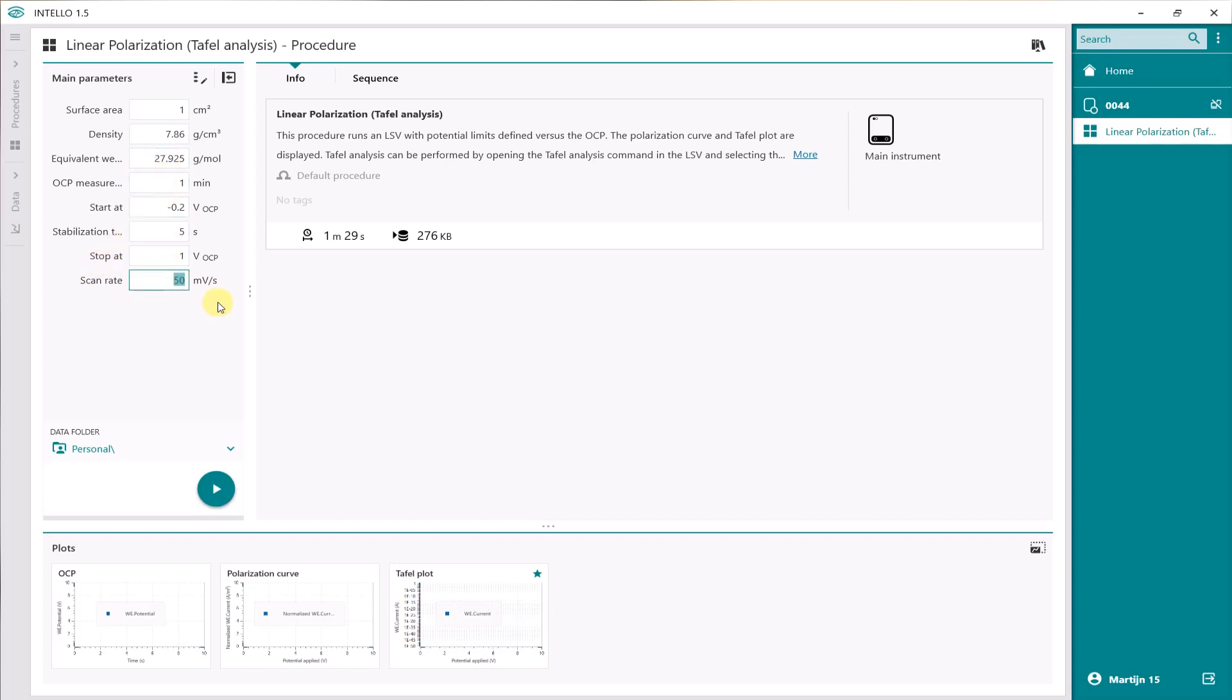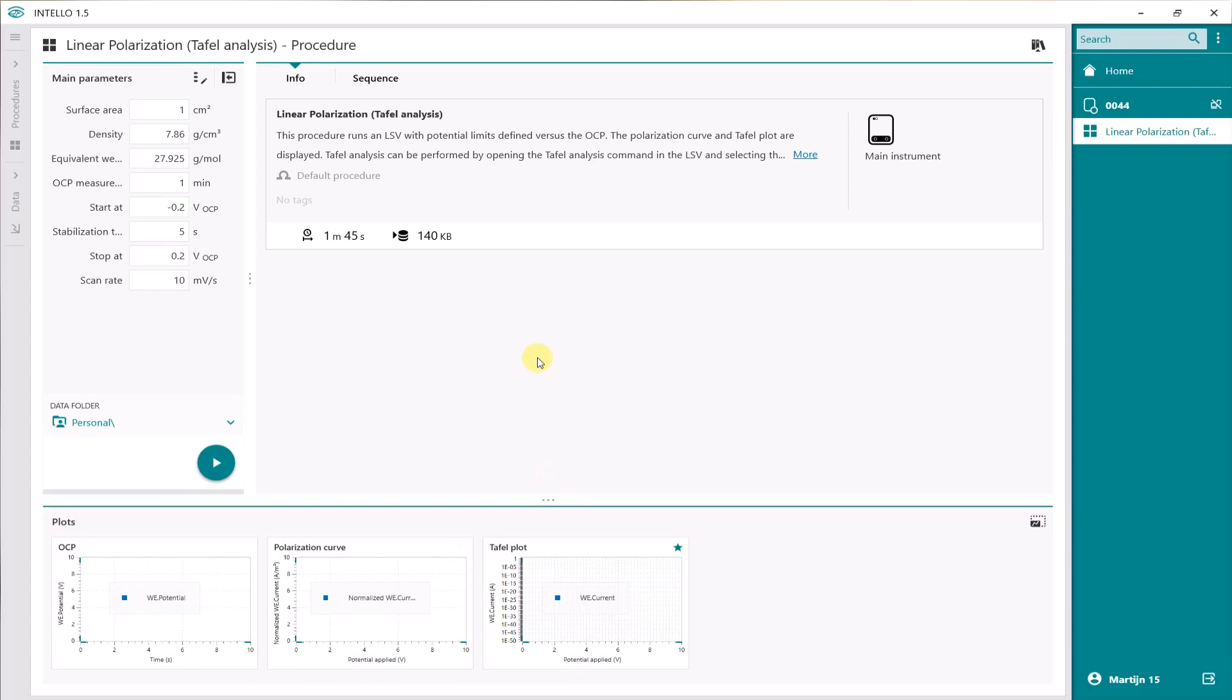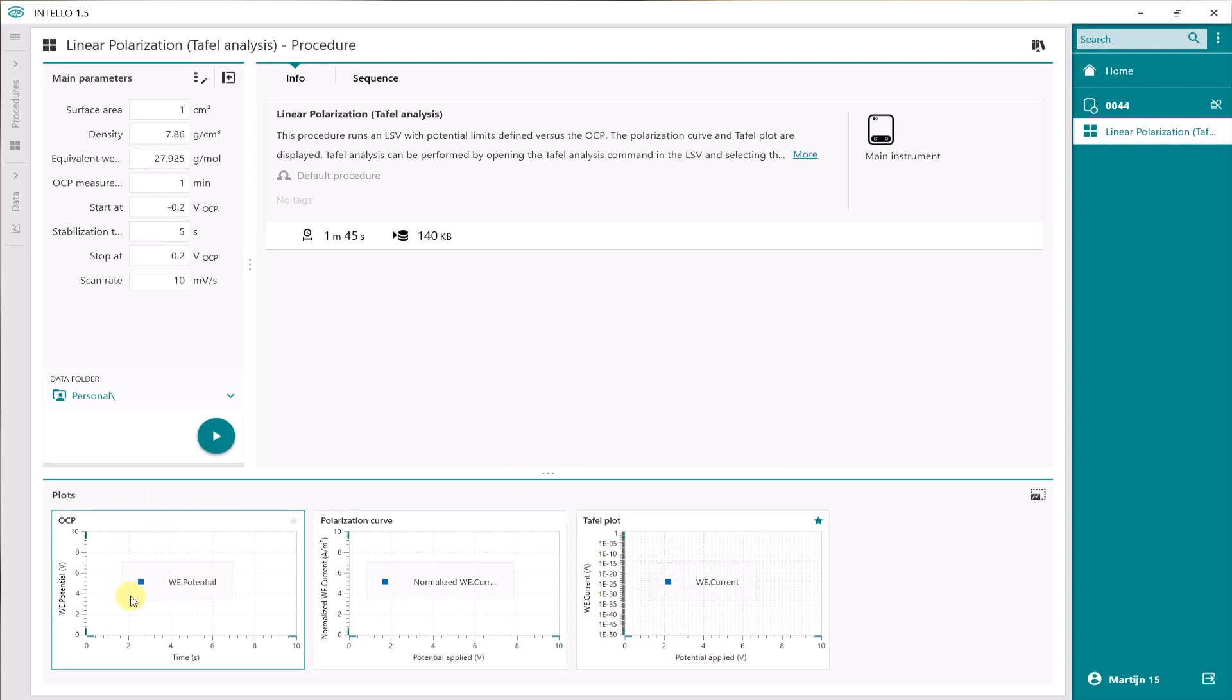Well, we want to scan slowly, so I'm going to minimize this to 10 millivolts per second. And I want to scan around 200 millivolts plus or minus the OCP. So this is minus 200 millivolts to plus 200 millivolts versus OCP. The OCP is measured for one minute and this is the parameters for my steel sample. Everything is set. And the data will be recorded with an OCP measurement, the polarization curve, and the Tafel plot.